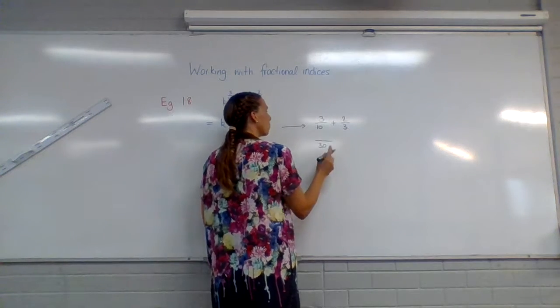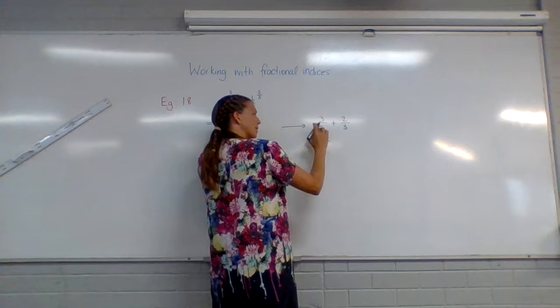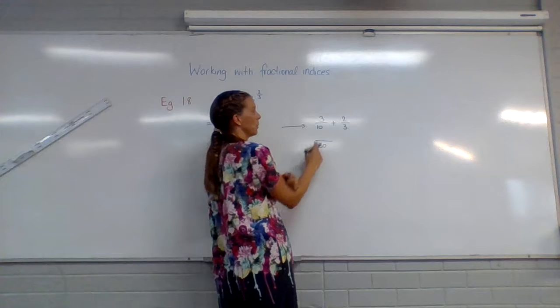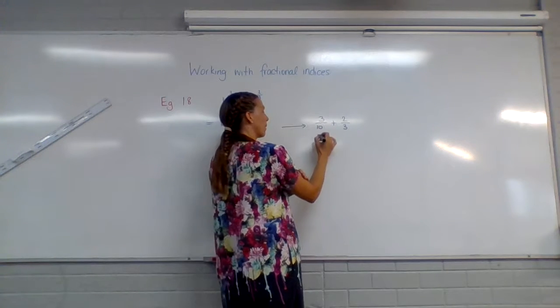So 30. Now to get from 10 to 30, I needed to multiply by 3. So I need to multiply the top by 3.